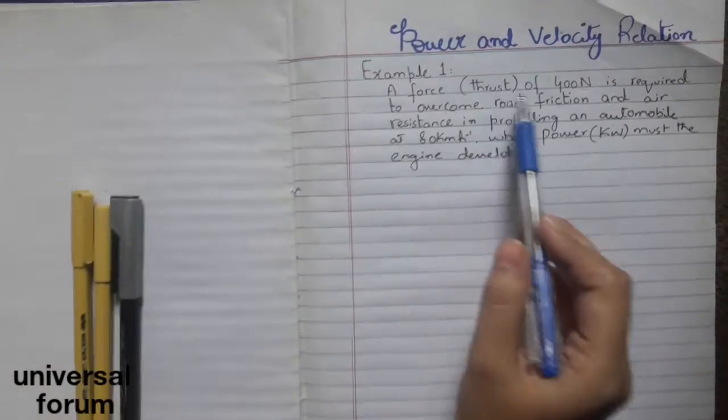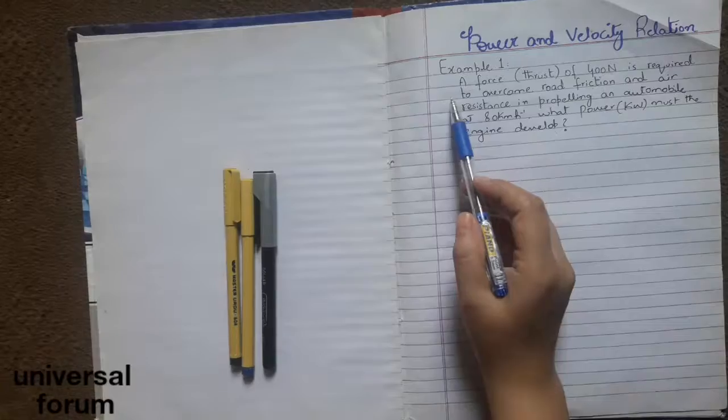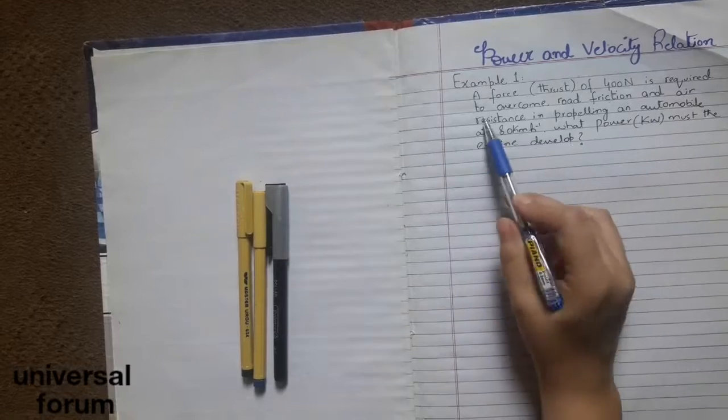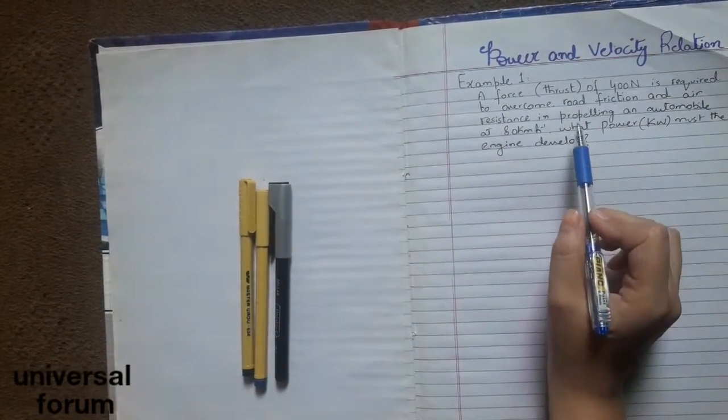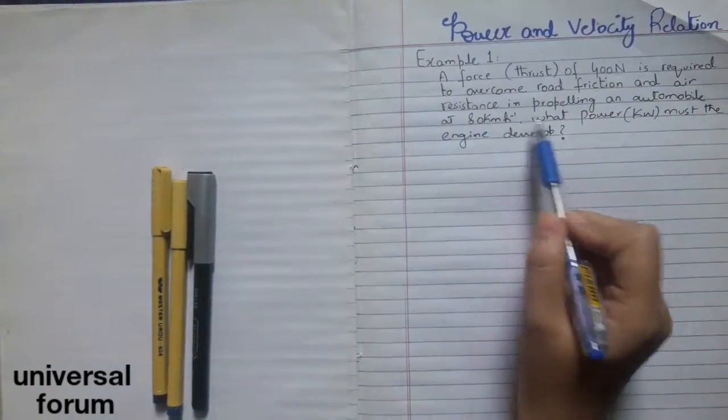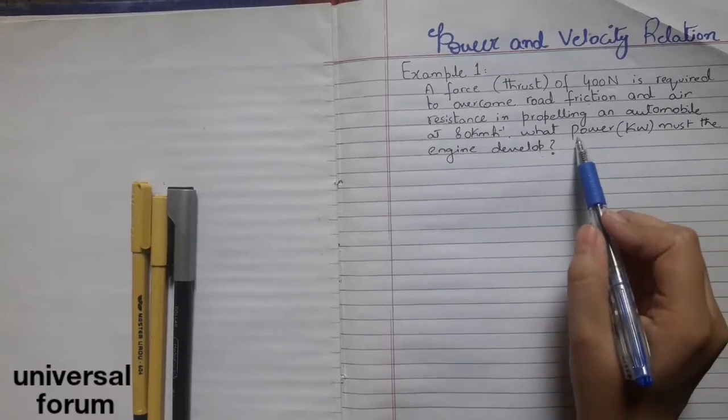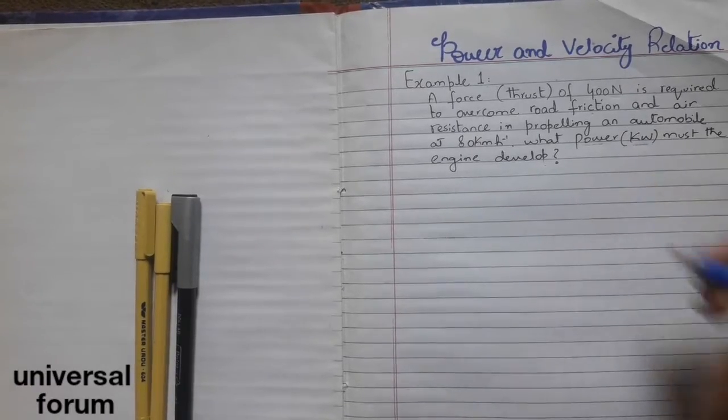Let's start. A force thrust of 400 Newtons is required to overcome road friction and air resistance in propelling an automobile at 80 kilometers per hour. What power must the engine develop? We can define the power in kilowatts.